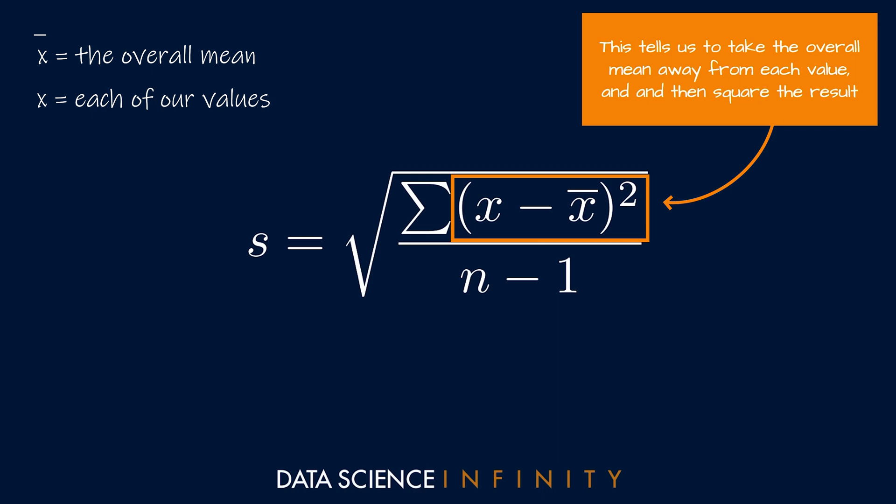But to set this all up, if we had say five values in our set, this part of the formula is telling us to first calculate the overall mean for those five values. Then we take this mean value away from each of the five individual values in our set. And the reason that we do this is because this tells us how far away each of our values is from the overall mean.